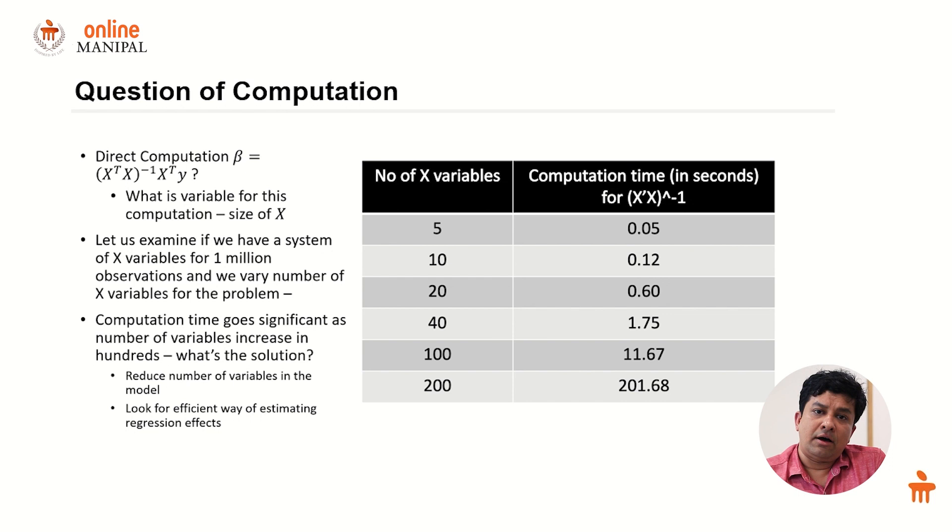I have increased the number of variables from five to 200. What you see is the computation time for x prime x inverse in the direct method. For five variables we take one twentieth of a second, but for 200 variables we take 200 seconds to compute x prime x inverse and then multiply with x prime y. This has been done for a system with 1 million observations. On a single problem I cannot afford to spend 200 seconds.